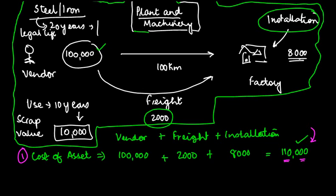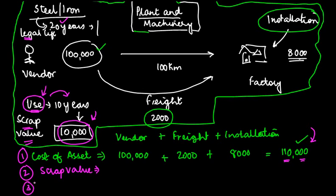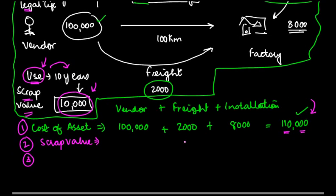The second and simpler one is the scrap value. Scrap value is the value which you can realize when you sell the machinery after its useful life is over. The useful life of the machinery is 10 years, even though the legal life is 20 years. But scrap value is to be considered at the end of the useful life, or the value which is expected to be realized from the sale of the asset. So scrap value is 10,000.